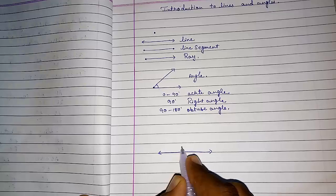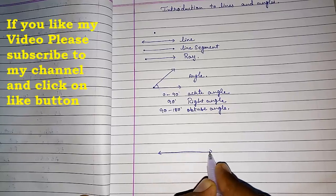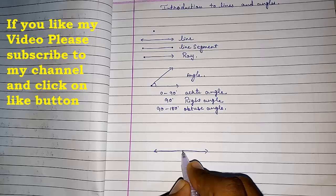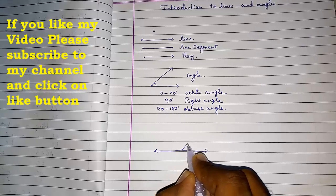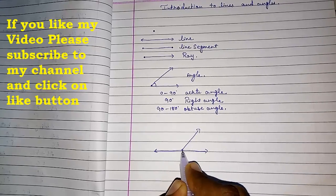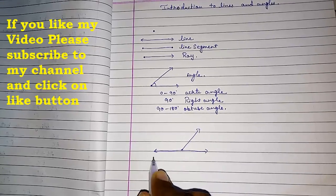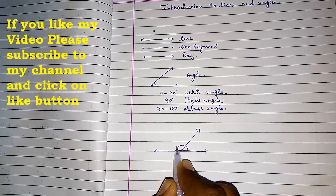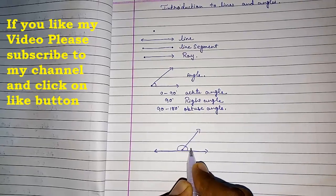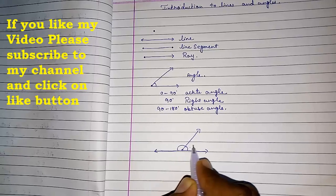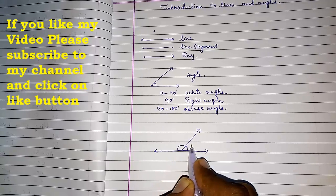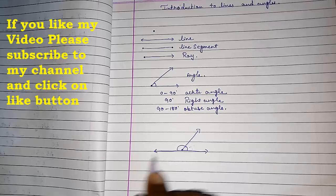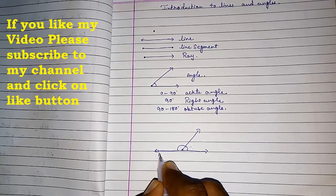If you have a straight line, it forms 180 degrees — this is called a straight angle. Now, if you draw any ray from a point on a line, you will get two angles, and the sum of those two angles is always 180 degrees. These two angles are called a linear pair of angles.